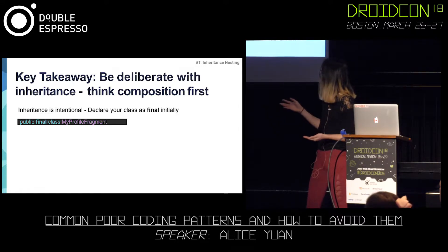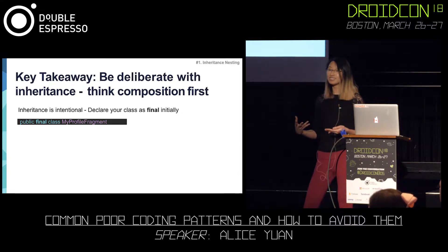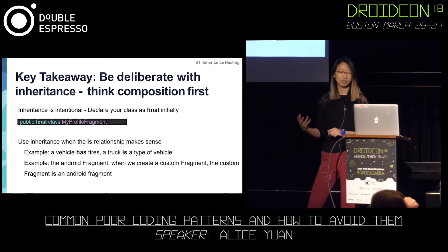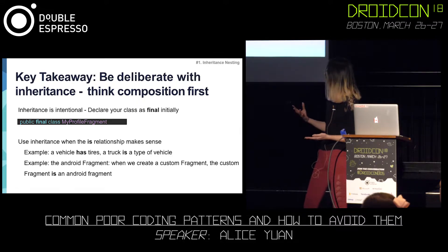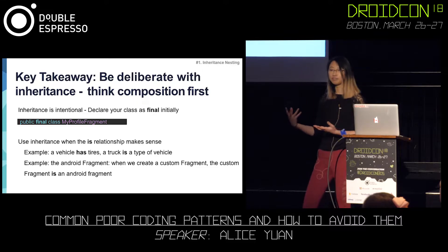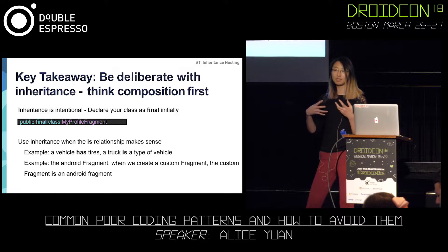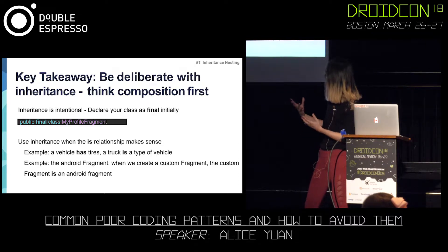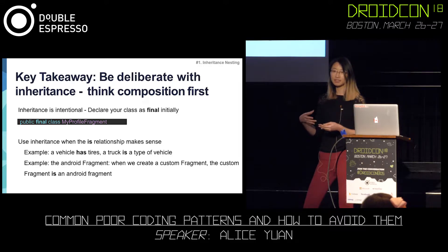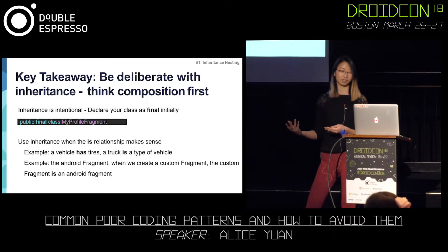This is something we have heard in other talks, and it's an effective Java programming practice. In Java, we would actually annotate the class with 'final'. But in Kotlin, that's free — all classes are closed from the beginning. We should use inheritance when the 'is' relationship makes sense. An abstract example: vehicles have tires, but a truck is a type of vehicle. In our example, the avatar view is contained by our fragments. The inheritance relationship in Android is that when we create custom Android fragments, that custom fragment is inheriting the Android fragment — so that's an inheritance relationship.